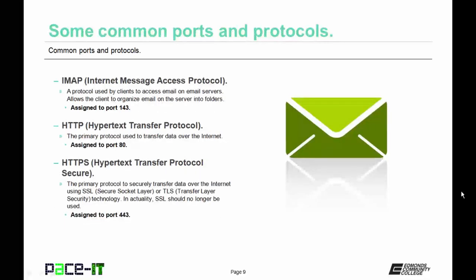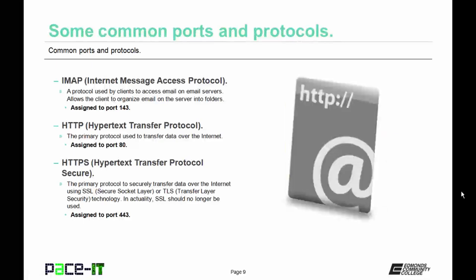Then we have IMAP, Internet Message Access Protocol. It is also a protocol used by clients to access email on email servers, but it allows the client to organize email on the server into folders and it leaves a copy on the email server. It's assigned to port 143. Then we have HTTP, Hypertext Transfer Protocol — the primary protocol used to transfer data over the internet and to request web pages. It's assigned to port 80.